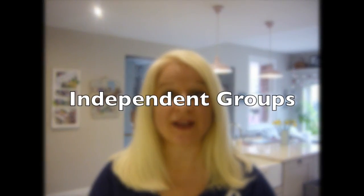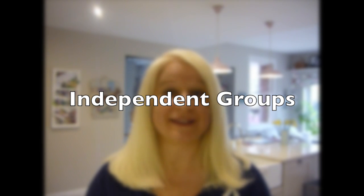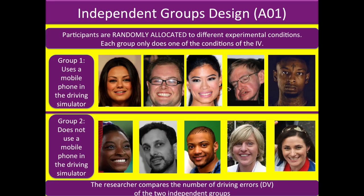The first experimental design is called independent groups — and that really is what it says. You get your participants and split them into two independent groups, and each group does one condition of the IV. Group A does the task without a mobile phone, group B does the task with a mobile phone, and then the experimenter compares the number of driving errors between the two independent groups.